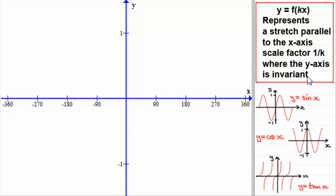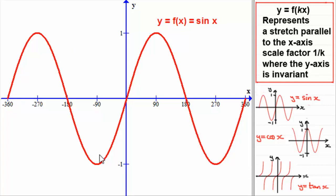That means that any points on the y-axis stay put — they don't move. First of all, we're going to look at the graph of y equals sine x. If we take f of x as sine x, the graph is a wave that goes between minus 1 and 1. I've drawn this graph going from minus 360 degrees to 360 degrees.